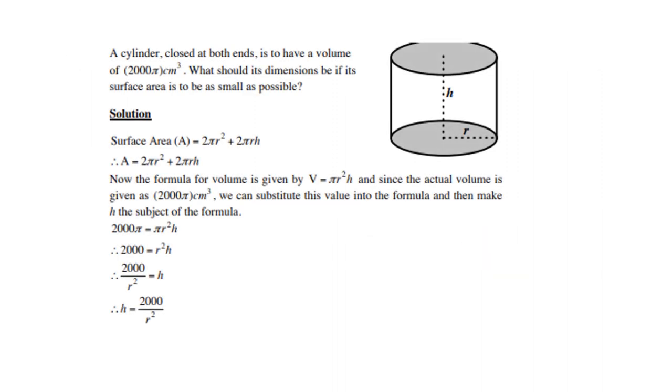Let's look at the example of a cylinder. Remember, a cylinder is a regular shape, meaning it is upright. A cylinder closed at both ends is to have a volume of 200π cm³. What should its dimensions be if its surface area is to be as small as possible?